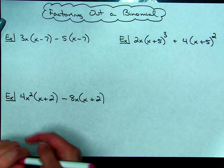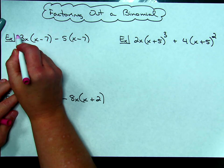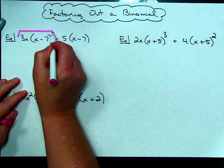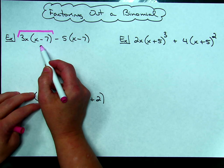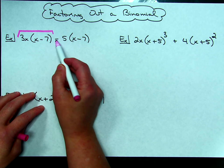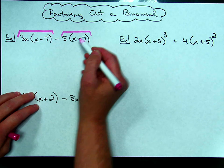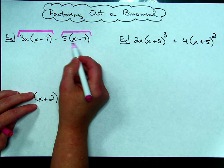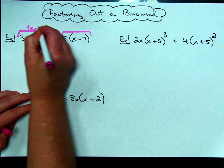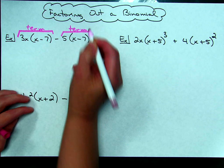For instance, the 3x times the quantity x minus 7 is a term, and it is separated with that minus sign, then the other term that is in the expression is the 5 times the quantity x minus 7. So we have two terms that are in this polynomial expression right here.